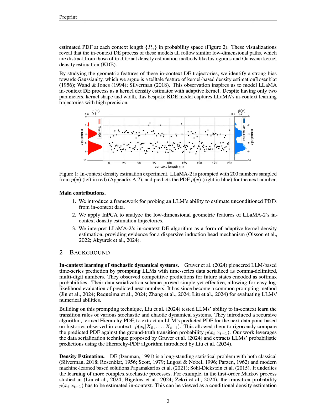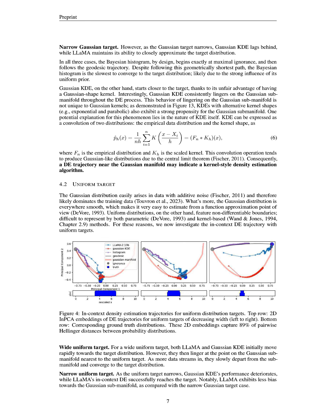The primary theoretical benefit of our proposed method for in-context density estimation lies in its adaptive kernel approach, which allows for a more flexible response to varying data distributions, compared to traditional methods like KDE and Bayesian histograms. Our bespoke KDE model captures LLaMA's in-context learning trajectories with high precision by optimizing both kernel shape and bandwidth, enabling it to better approximate complex distributions, particularly in low-data regimes. Practically, this adaptability results in improved performance, as evidenced by LLaMA's ability to differentiate between narrow, uniform, and Gaussian targets more effectively than Gaussian KDE, which tends to linger on the Gaussian sub-manifold.